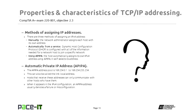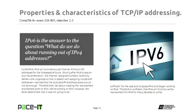Now that we've covered the basics of IPv4, let's talk about IPv6. IPv6 is the answer to the question of what do we do about running out of IPv4 addresses. It will provide enough IP addresses for the foreseeable future. Shortly after IPv4's creation, the Internet Assigned Numbers Authority — the IANA — discovered that in pretty short order they would run out of IPv4 addresses. So to preserve it, they created the private IPv4 address spaces and started working on a replacement.